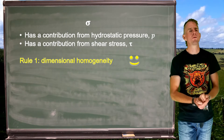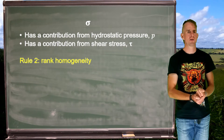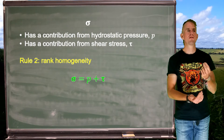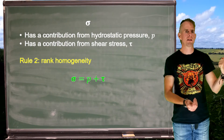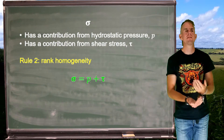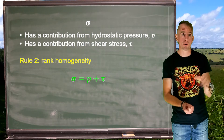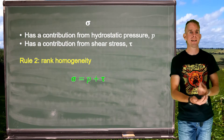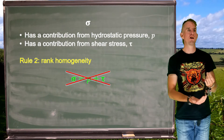Rule number two was rank homogeneity — we can't add together tensors of different rank. On the blackboard: sigma is a second rank tensor (total stress); italic p is a scalar, a rank zero tensor; bold non-italic tau is another second rank tensor. So this summation is completely invalid because we have not obeyed rank homogeneity. Let's see how we can make that scalar p into a tensor.